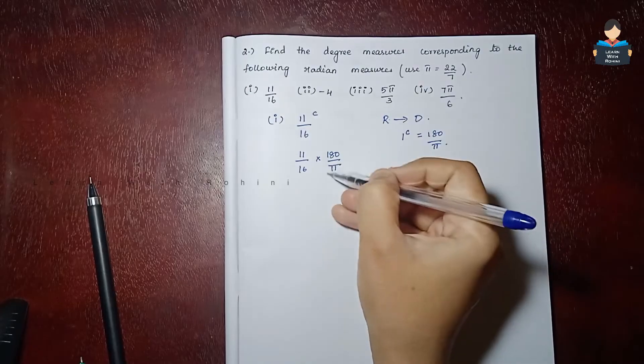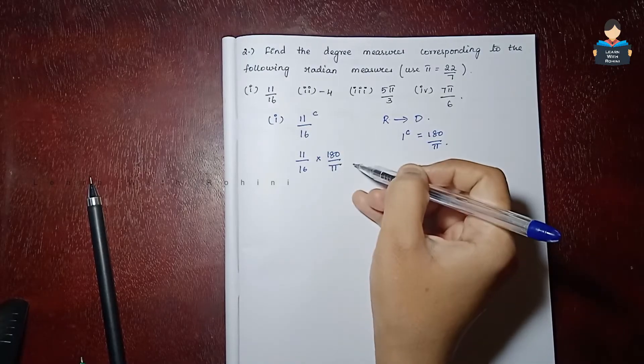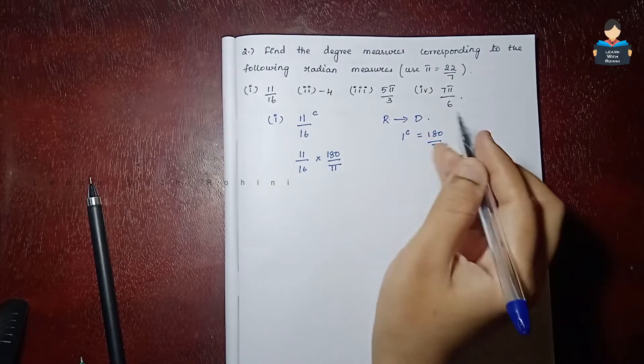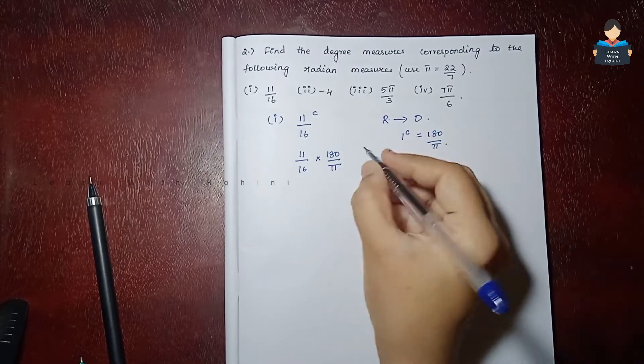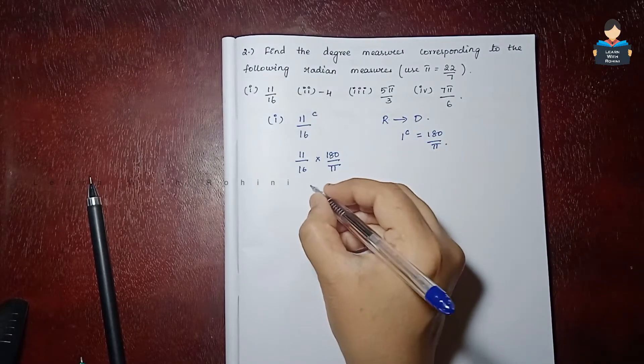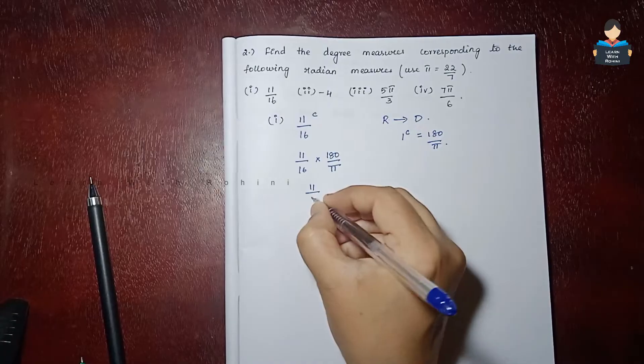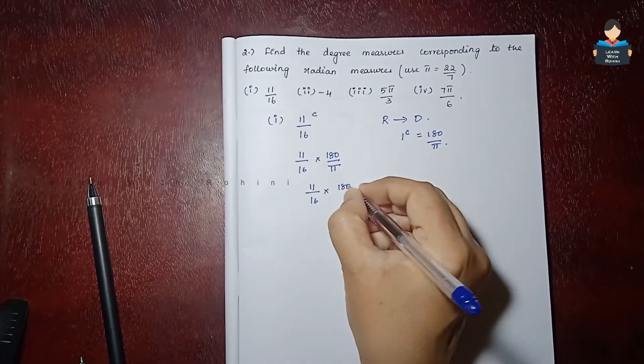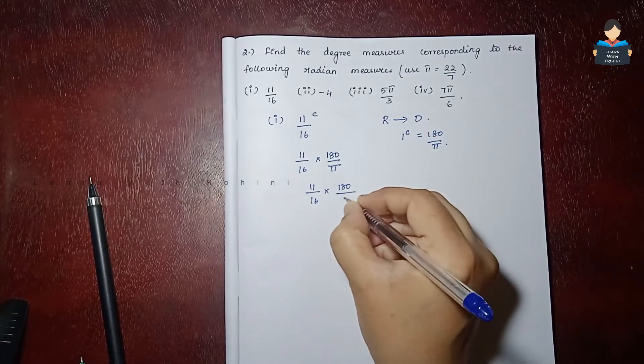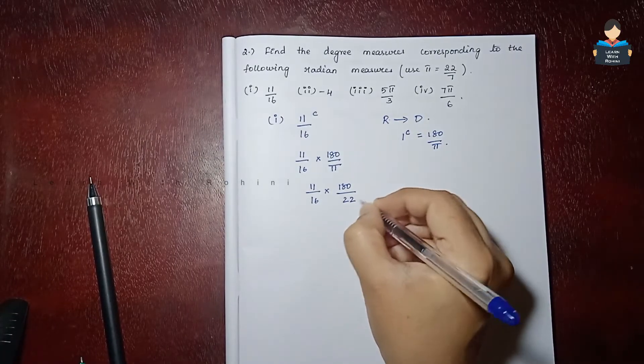We substitute pi equals 22 by 7. So we have 11 by 16 into 180 by 22 by 7.